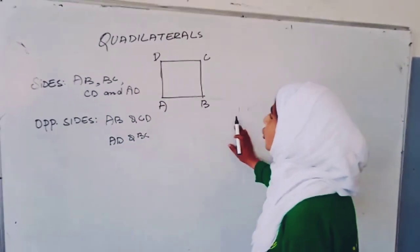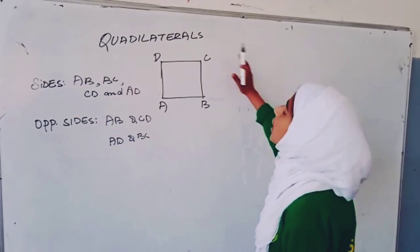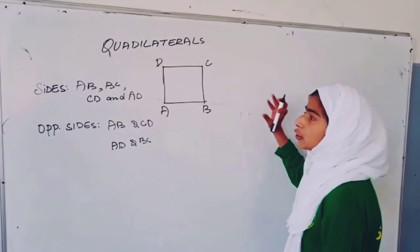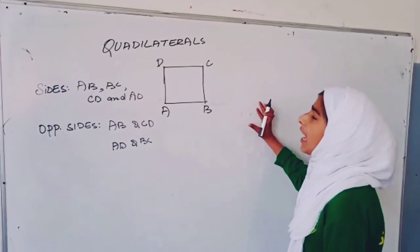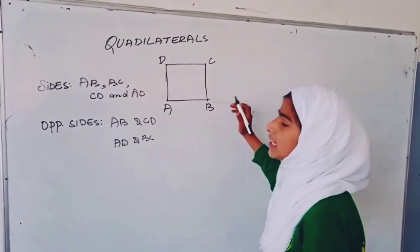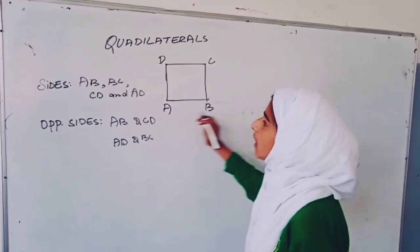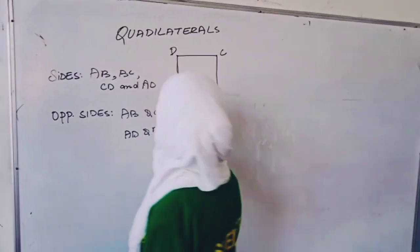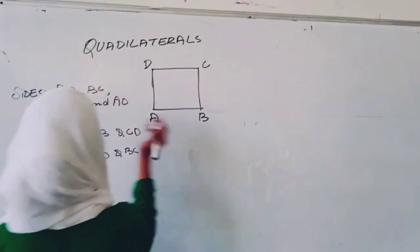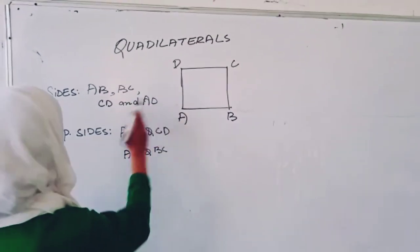Today our topic is about quadrilaterals. A quadrilateral is a closed figure having four sides — it's a polygon having four sides. The sides are AB, BC, CD, and DA.